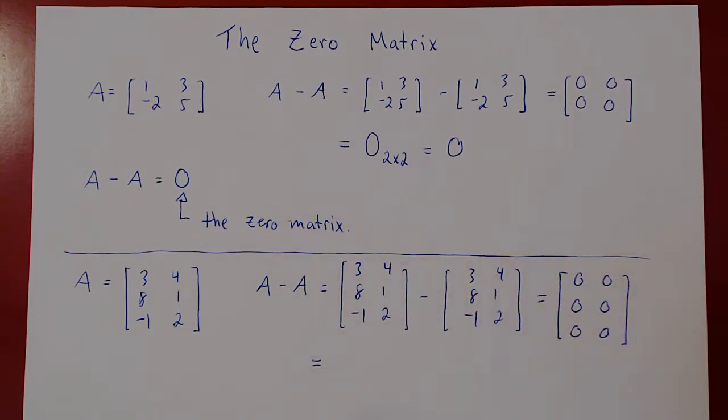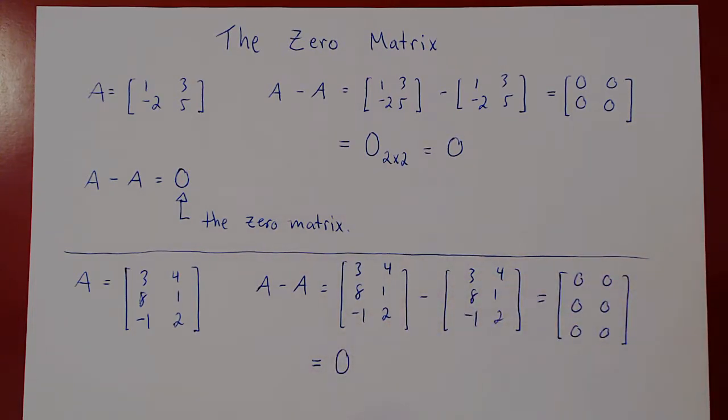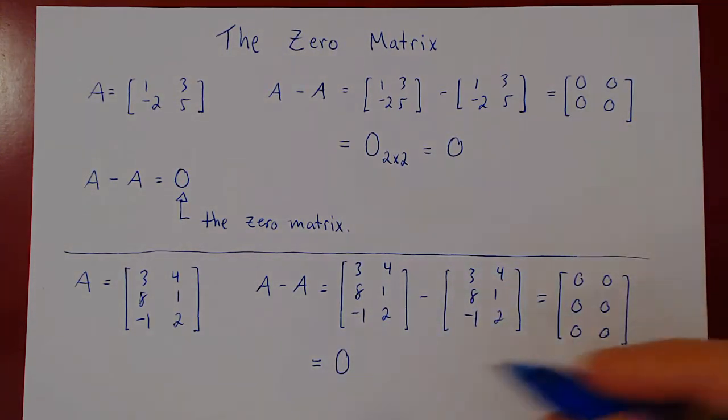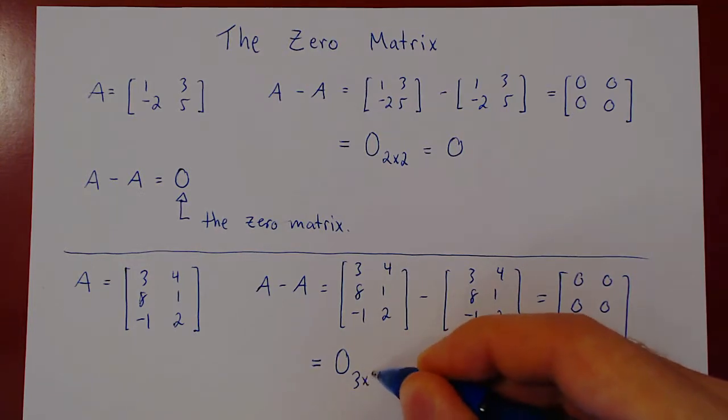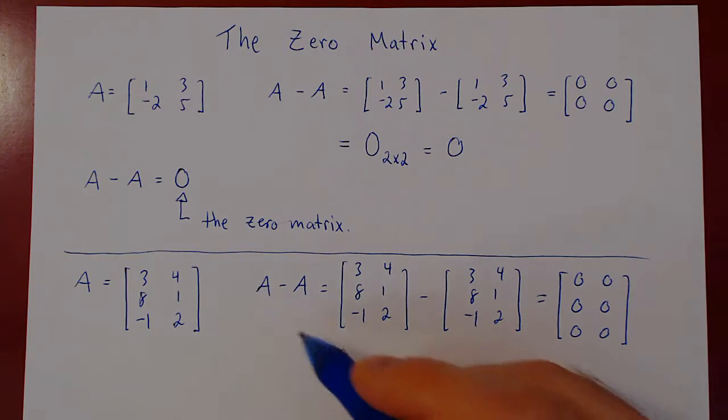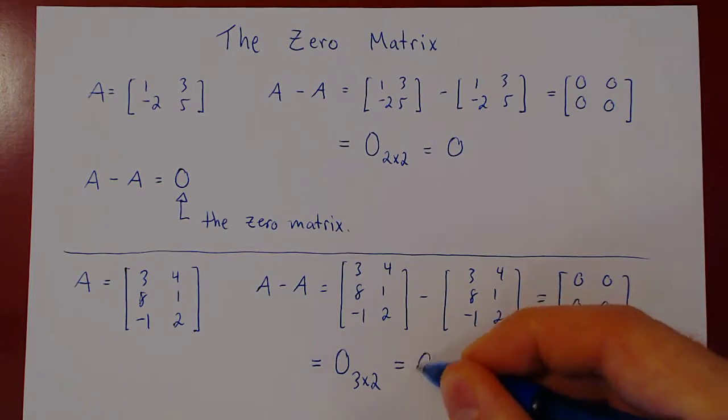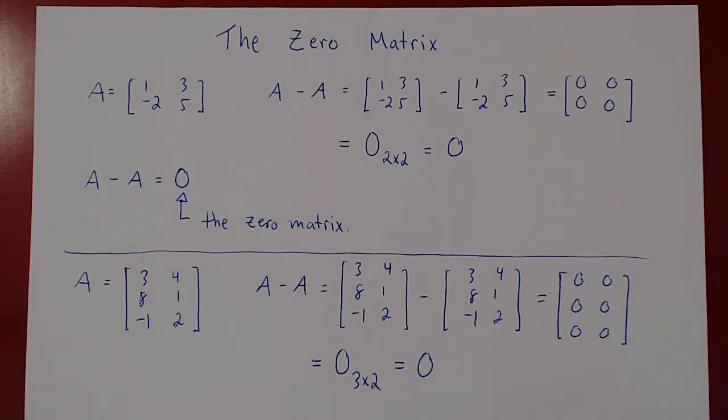So we could write this again in two ways. We could write this as an uppercase zero, and we could specify explicitly the size, 3 by 2, 3 rows by 2 columns. But again, this is not necessary, as whatever the size of A is, this will be the same size for our zero matrix. So we simply write uppercase zero. And that's the zero matrix.